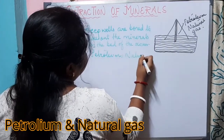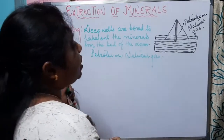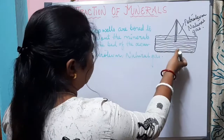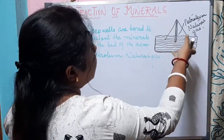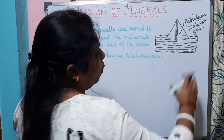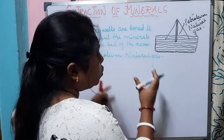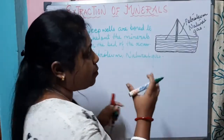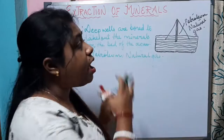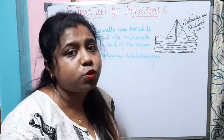Petroleum and natural gas are the minerals extracted through drilling. They occur far below the earth's surface, in the ocean bed. We dig out deep wells to take out these minerals. Along with petroleum, natural gas is also obtained. This is a totally mechanized and very costly process.